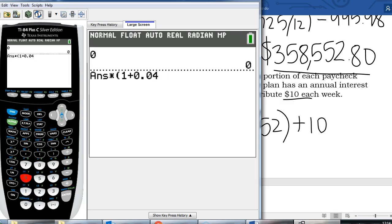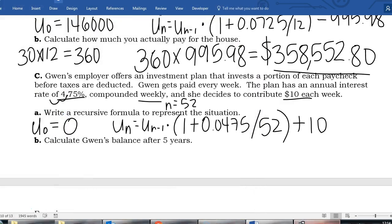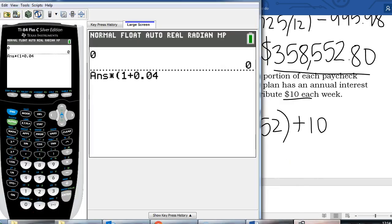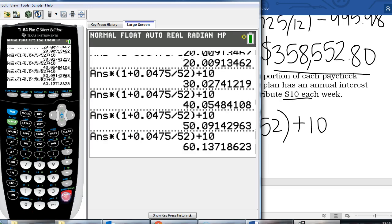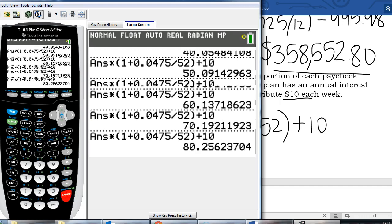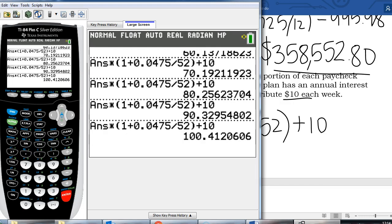And then we are going to add our interest to that, 0.0475, and we're compounding weekly and we're going to add $10 to our account every week. So the reason I'm not going to do this for five years is because remember every time I hit enter that means one week went by. This would be two weeks, three weeks, four weeks, five weeks, six weeks, seven, eight, nine, ten weeks. I'd have to hit enter 52 times to get to one year.